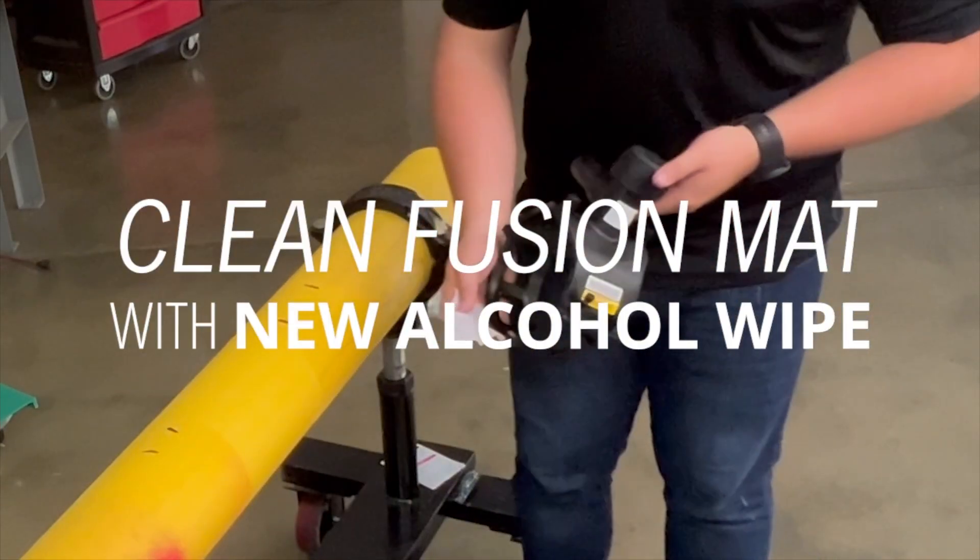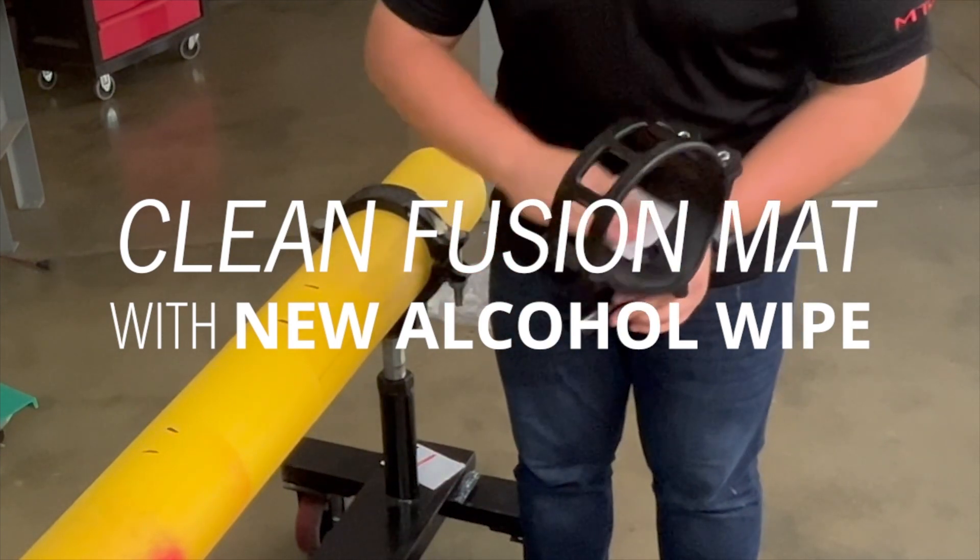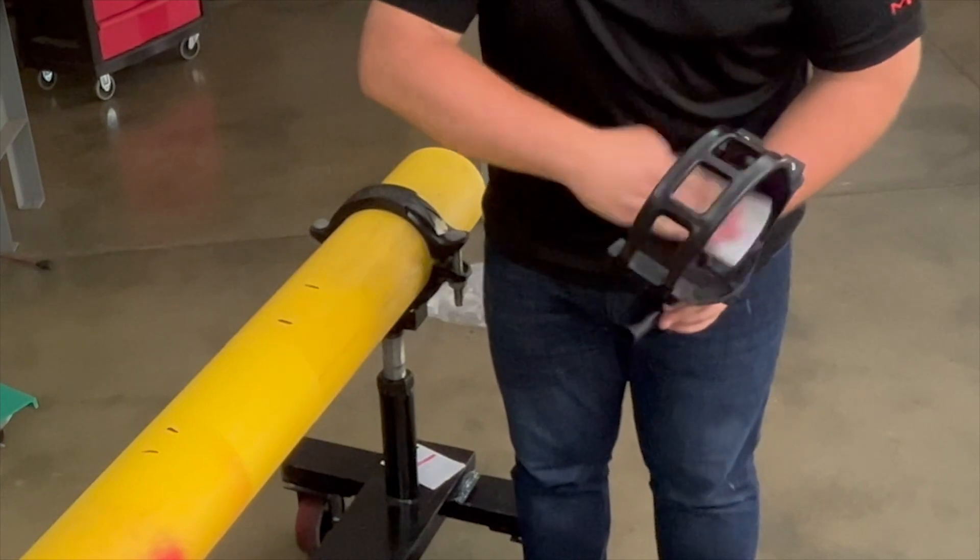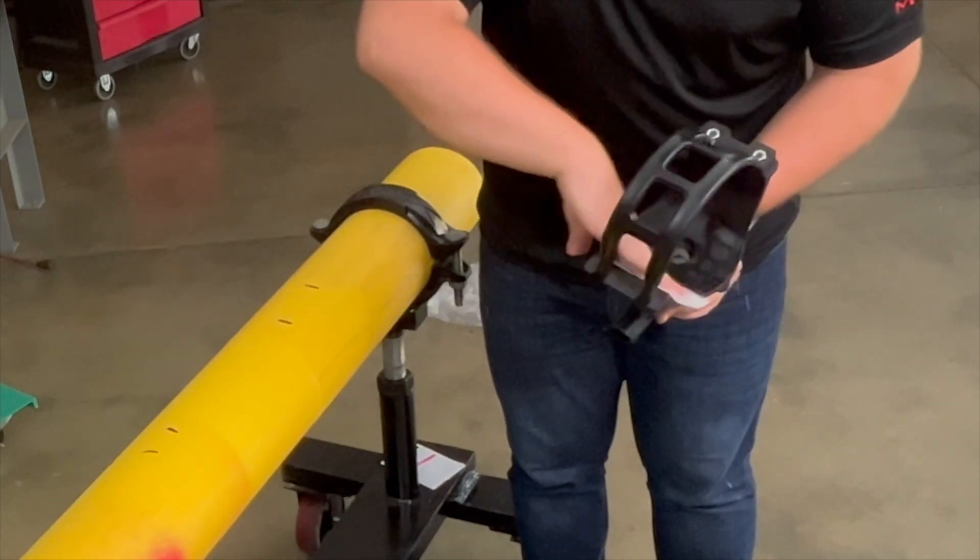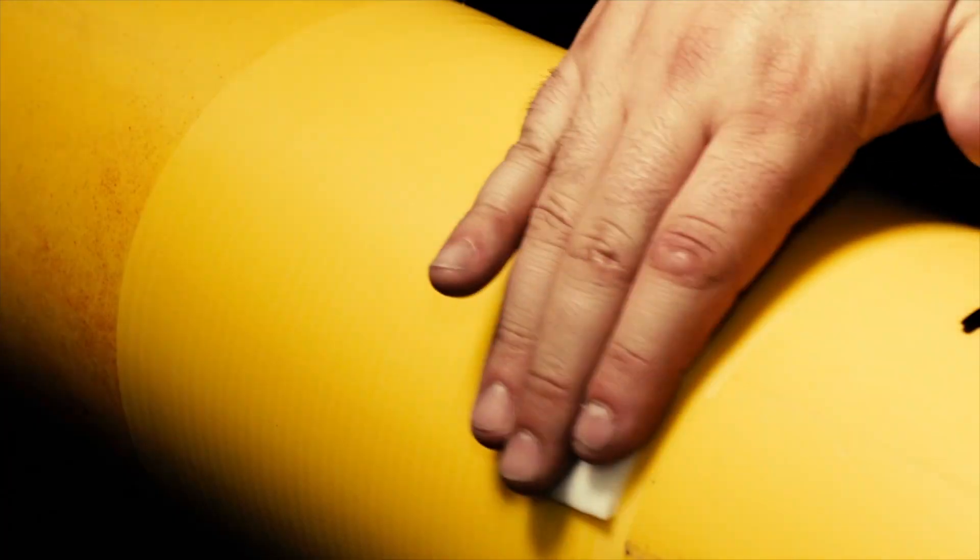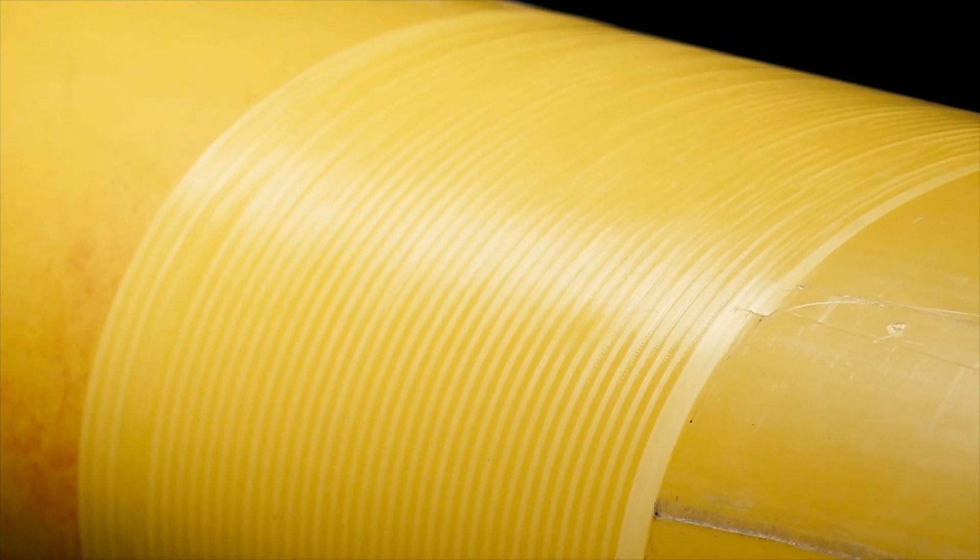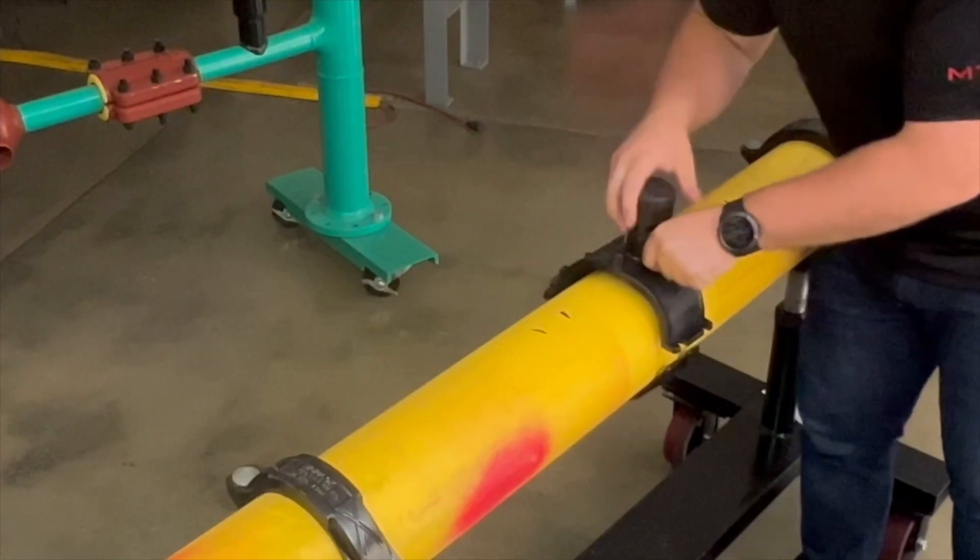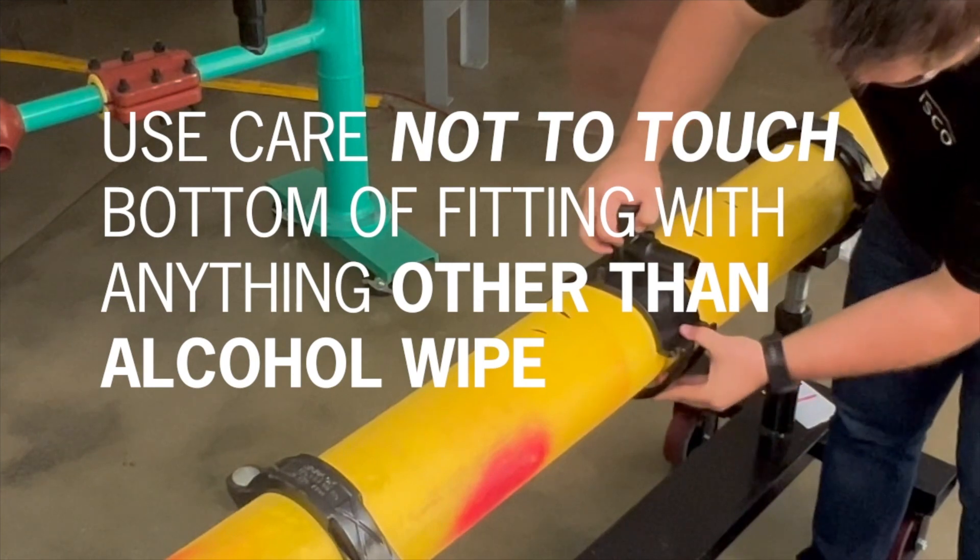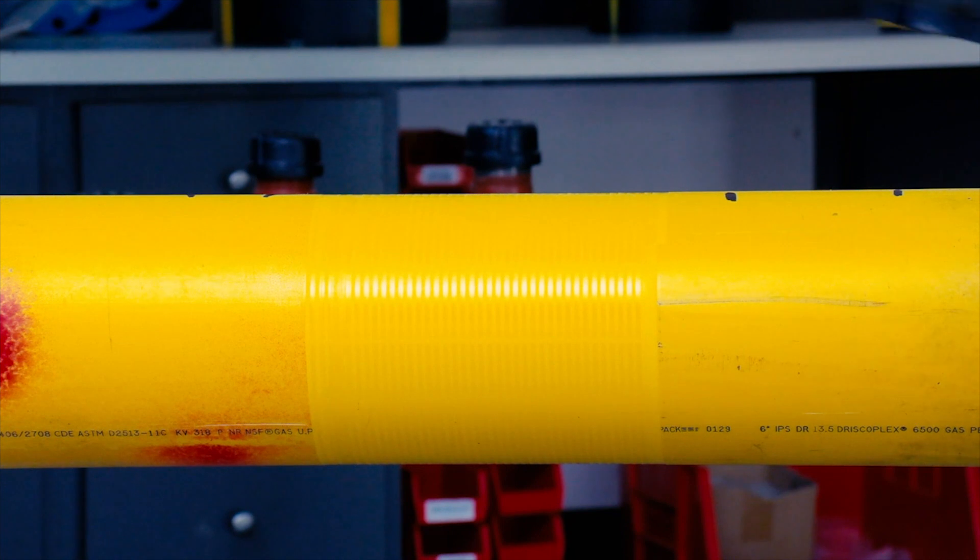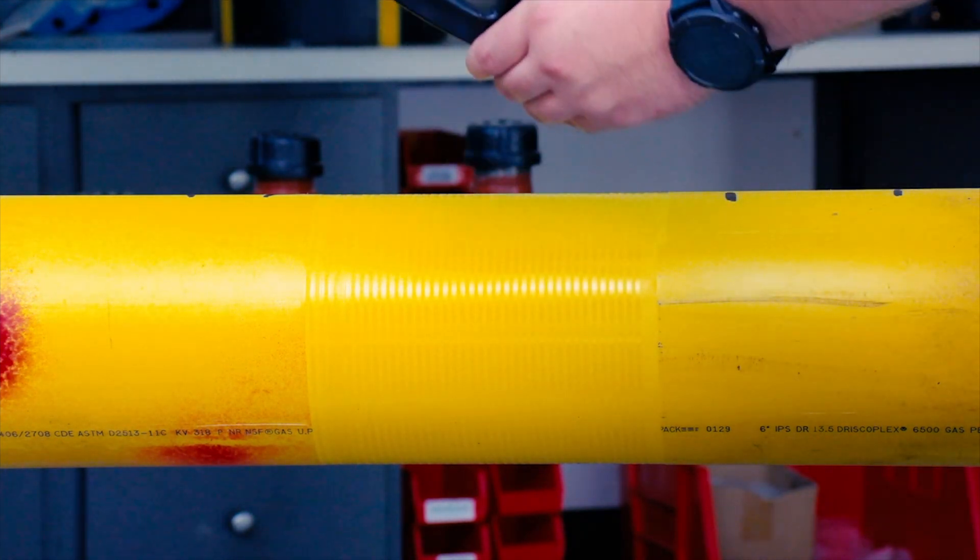Remove the tapping tee from the bag and clean the fusion mat with another alcohol wipe. Make sure all the alcohol and moisture has evaporated from the pipe and the fitting before continuing. Often you can see the alcohol vaporizing from the pipe and fitting surfaces. Position the tapping tee on the prepared fusion area, taking care not to touch the fusion zone of the pipe or fitting. Make sure the fitting is only touching peeled, cleaned pipe surface.